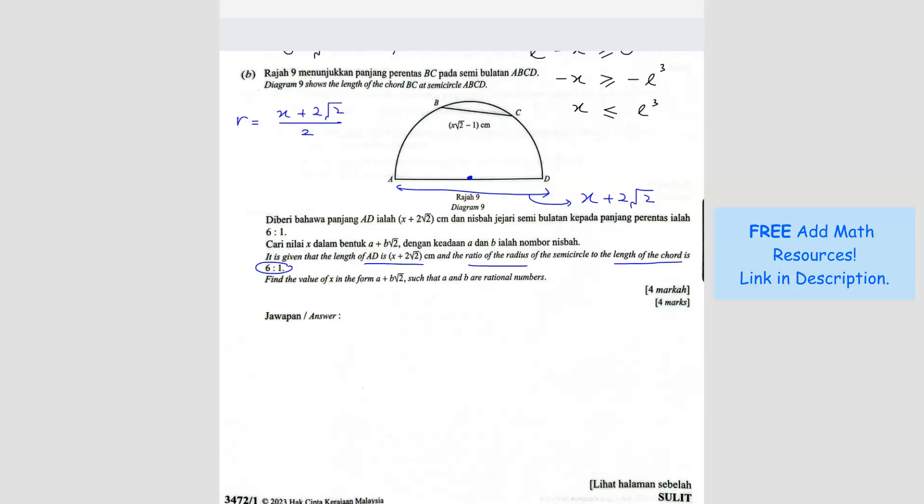So the ratio between the radius to this chord is 6 to 1. Find the value of x in the form of this such that A and B are rational numbers. So we can use the ratio. Let's say this is O. So the radius is AO. So AO over the chord BC equals 6 to 1. That's the ratio that's given. So you can cross multiply. So you can get AO equals to 6 BC. Just cross multiply.